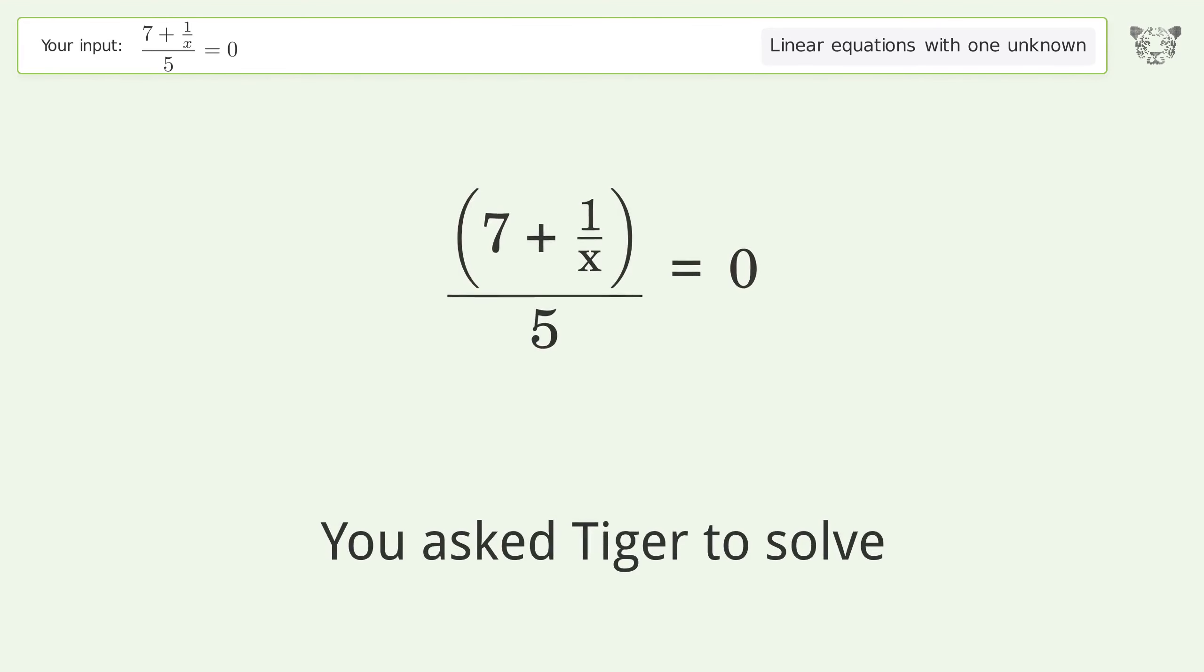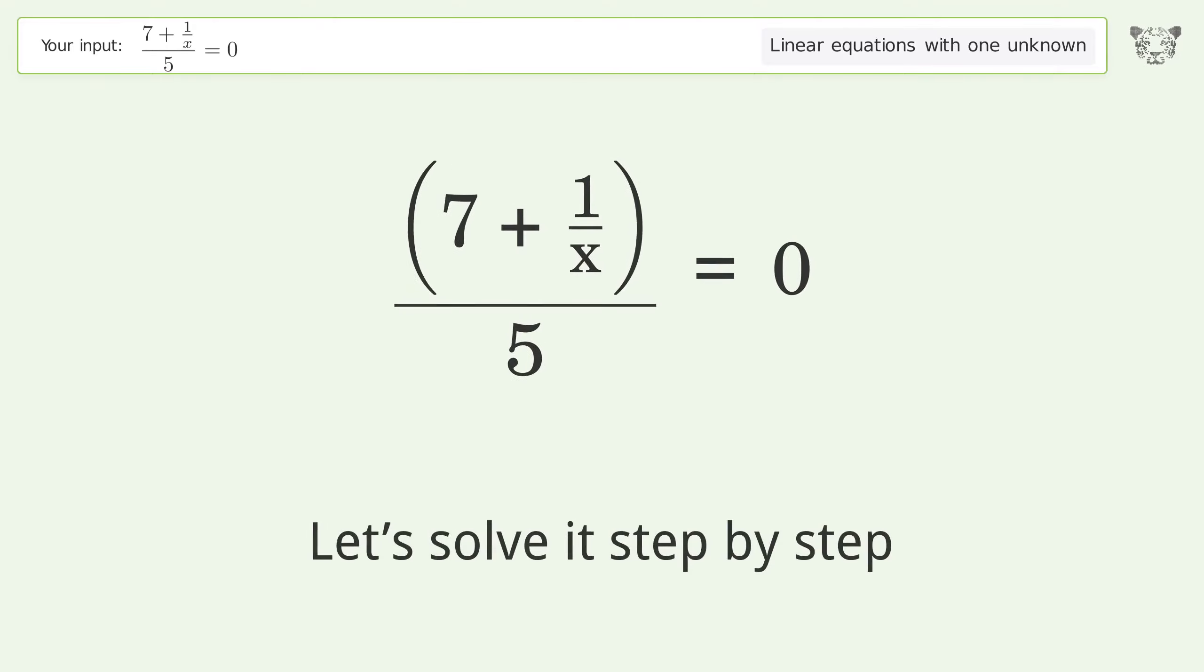You asked Tiger to solve this. It deals with linear equations with one unknown. The final result is x equals negative 1 over 7. Let's solve it step by step.